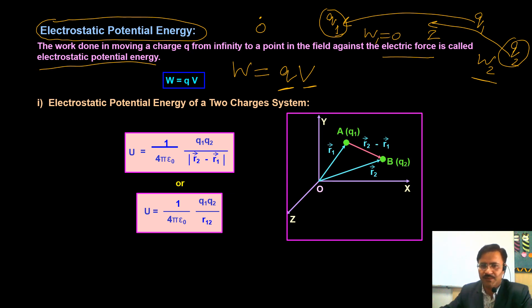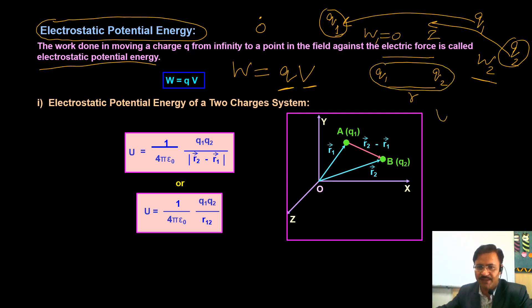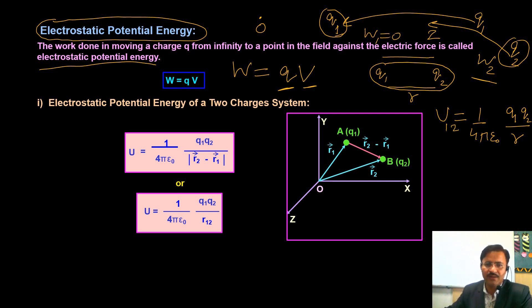For two charges separated by distance r forming a pair, potential energy is mathematically written as U = 1/(4πε₀) × q1·q2/r. If position vectors of q1 and q2 are given as r1 and r2, then potential energy is 1/(4πε₀) × q1·q2 / |r2 − r1|, where |r2 − r1| is the distance between the two points.